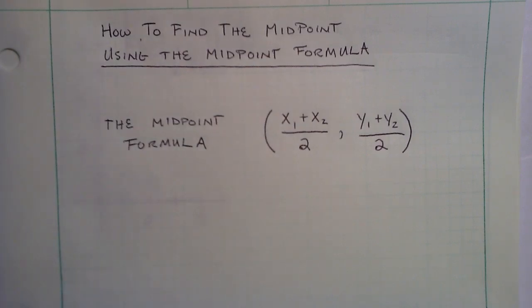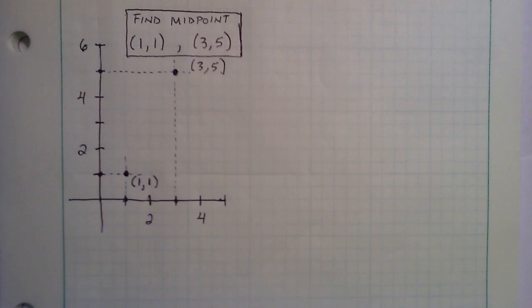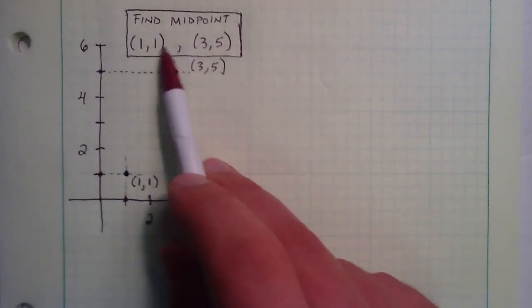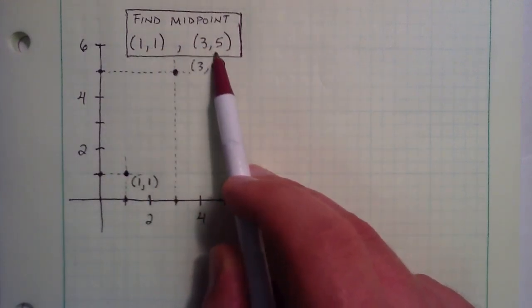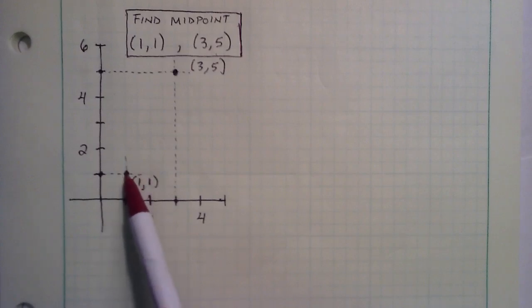So let's go ahead and start our example here. We're going to find the midpoint between the points (1,1) and (3,5). I already went ahead and plotted both of these points. As you can see, this has an x component of 1, a y component of 1, so where those two projections cross is the point (1,1).